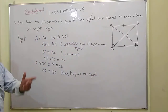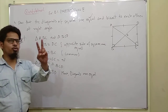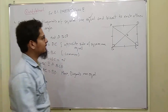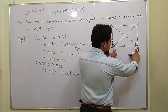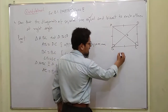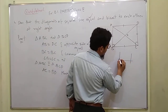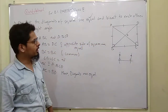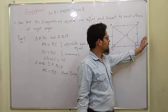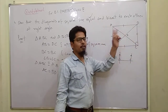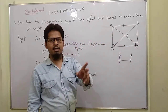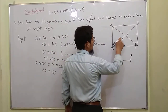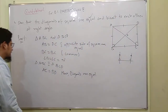Second point: diagonals bisect each other at right angle — these two things are left to be proved. Now we can prove it. The sum of angles is 90 degrees. When AB is parallel to CD, we can prove these diagonals bisect each other: AO is equal to OC and OB is equal to OD.